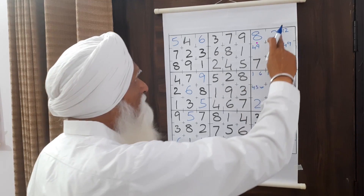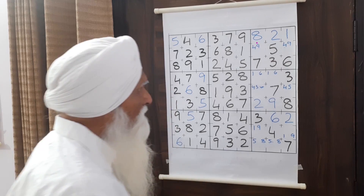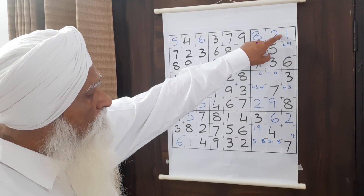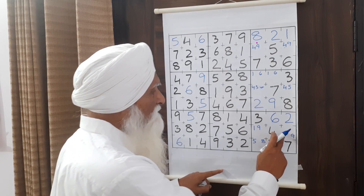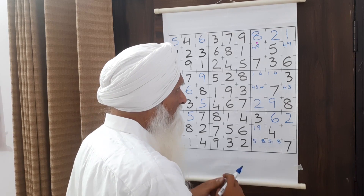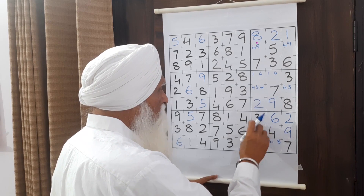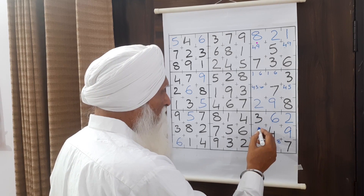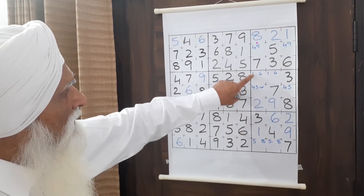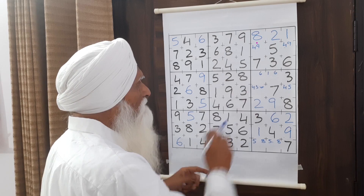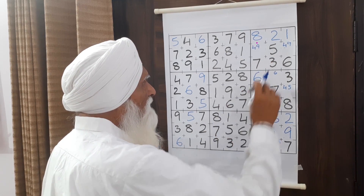With eight placed, one and one will remain in their respective cells. If we have one here, one gets eliminated from the adjacent cell, leaving nine there. With six here, one will come in another cell. If we get one there, one gets eliminated from the next cell and we will have six only in that position.